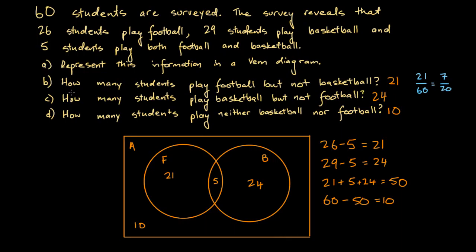What if the question were: what is the probability a randomly chosen student plays basketball but not football? That's 24 over 60, which reduces to 8 over 20, or 2 over 5. And for neither basketball nor football, that's 10 out of 60, which reduces to 1 over 6. And we're done.